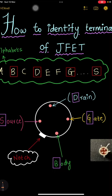Everyone, welcome to the new video. In this particular video, I'm going to tell you the shortcut trick to identify the terminals of JFET. There are four terminals of JFET: body, drain, gate, and source.